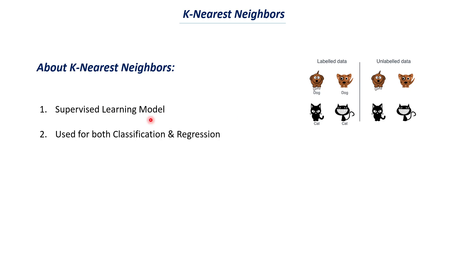K-nearest neighbor can be used for both classification and regression. In supervised learning there are two tasks: classification and regression. Classification is when we want to classify data points into categories, whereas regression is about predicting certain numbers. For example, predicting whether a person gets a job or not is a classification problem — it's a yes or no question. Predicting what salary a person is going to make is a regression problem because we are finding a continuous numerical value. KNN can be used for both, which is one of its advantages.